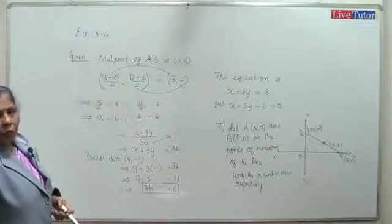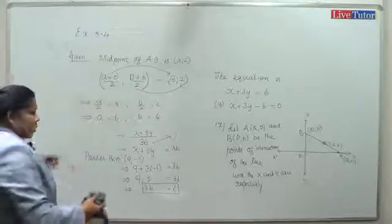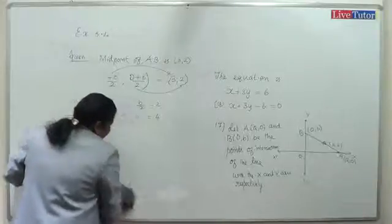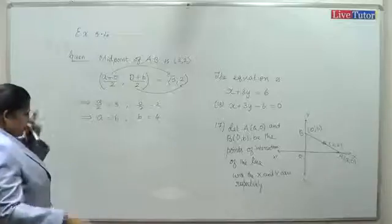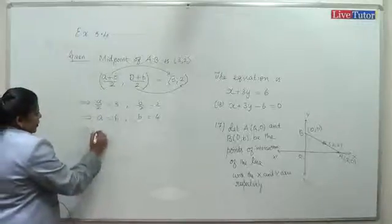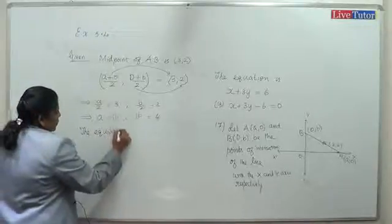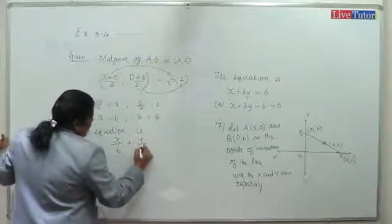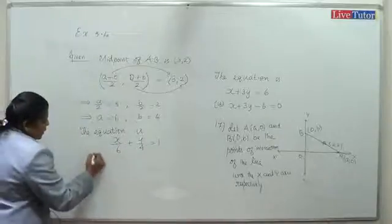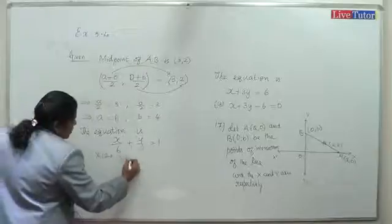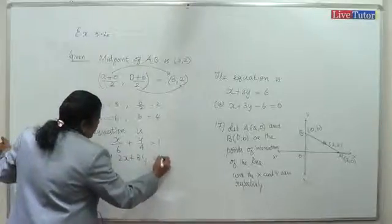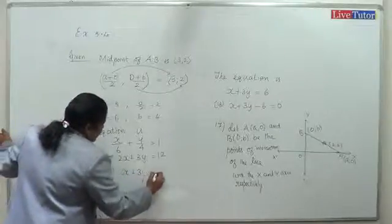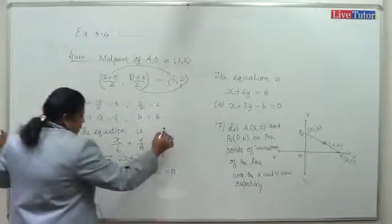Using the intercept form where a is the x-intercept and b is the y-intercept, the equation is x by 6 plus y by 4 equals 1. Multiplying through by 12 (LCM), we get 2x plus 3y equals 12, that is 2x plus 3y minus 12 equal to 0.